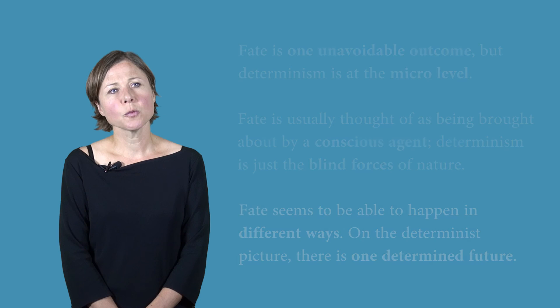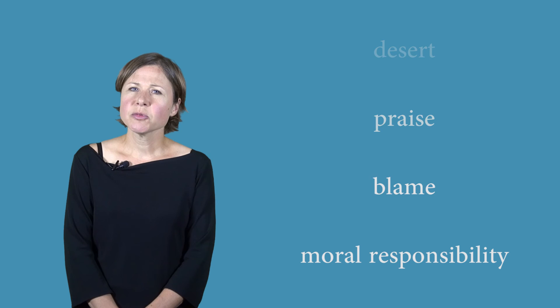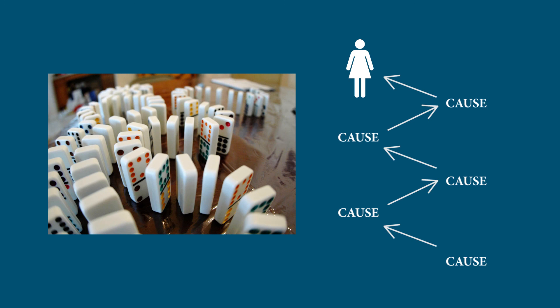So why worry about determinism? Why does it matter? Well, it matters because it seems as though if what we do is determined, then in a sense, we're not free. We're not making our own decisions. Everything that happens is what was always going to happen, including the things that I decide to do, including the efforts that I make, including the things that we think of ourselves as deserving. So ideas like desert, praise, blame, moral responsibility in general, seem to dissolve. It seems as if none of this stuff is worth thinking about anymore, because we're just part of this massive causal chain. We're just dominoes waiting to be knocked over by the next domino in the chain.